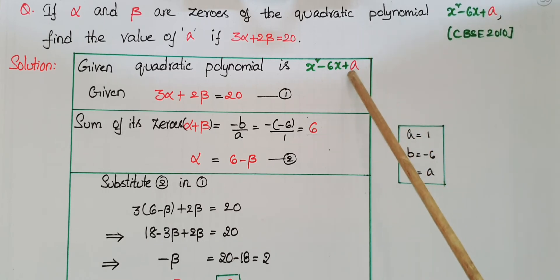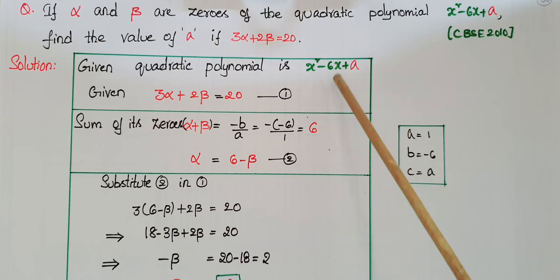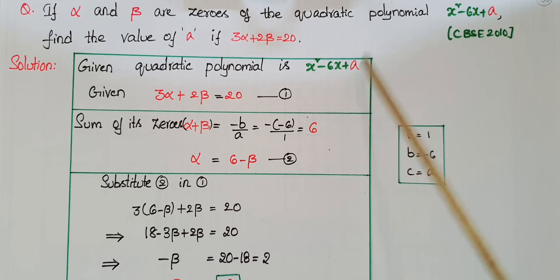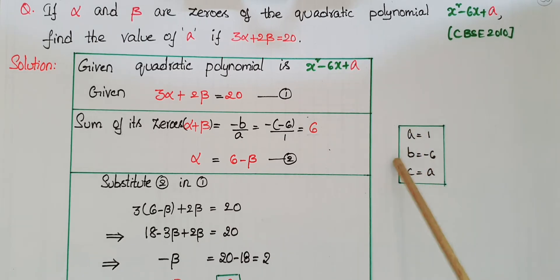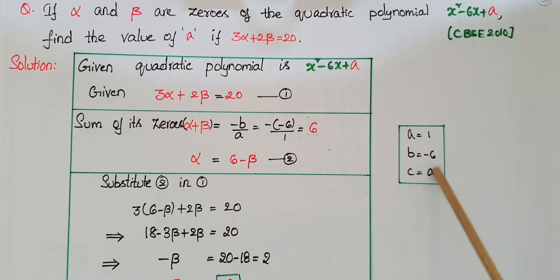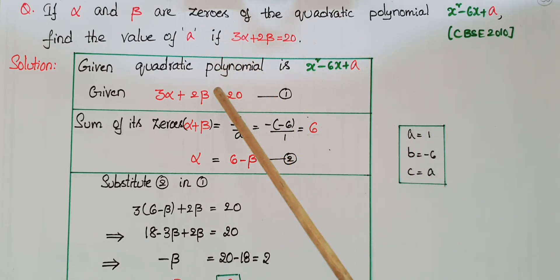We have to find this constant value. It is in the form of ax squared plus bx plus c. So here a is equal to 1, b is equal to minus 6, and c is equal to a.